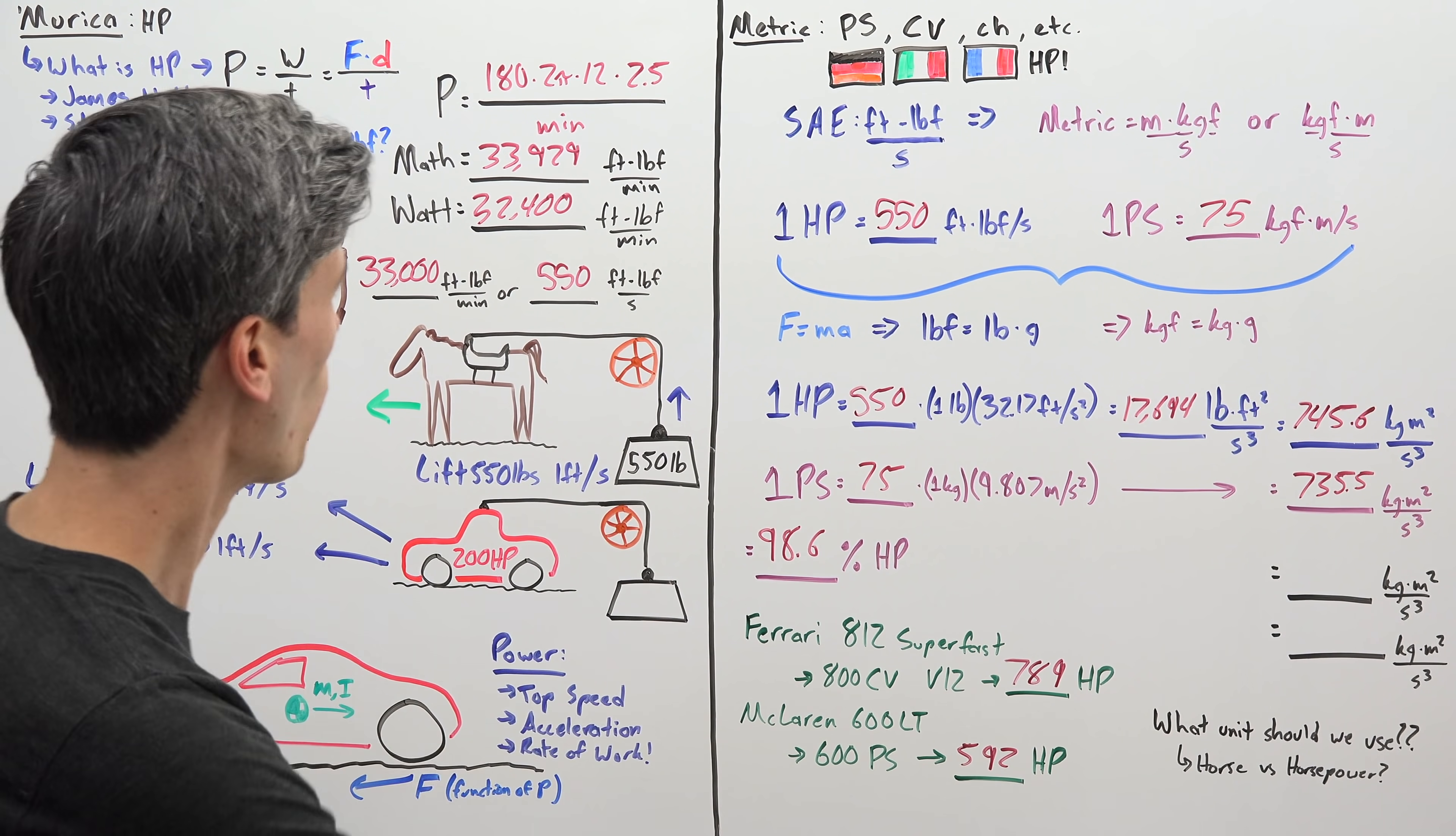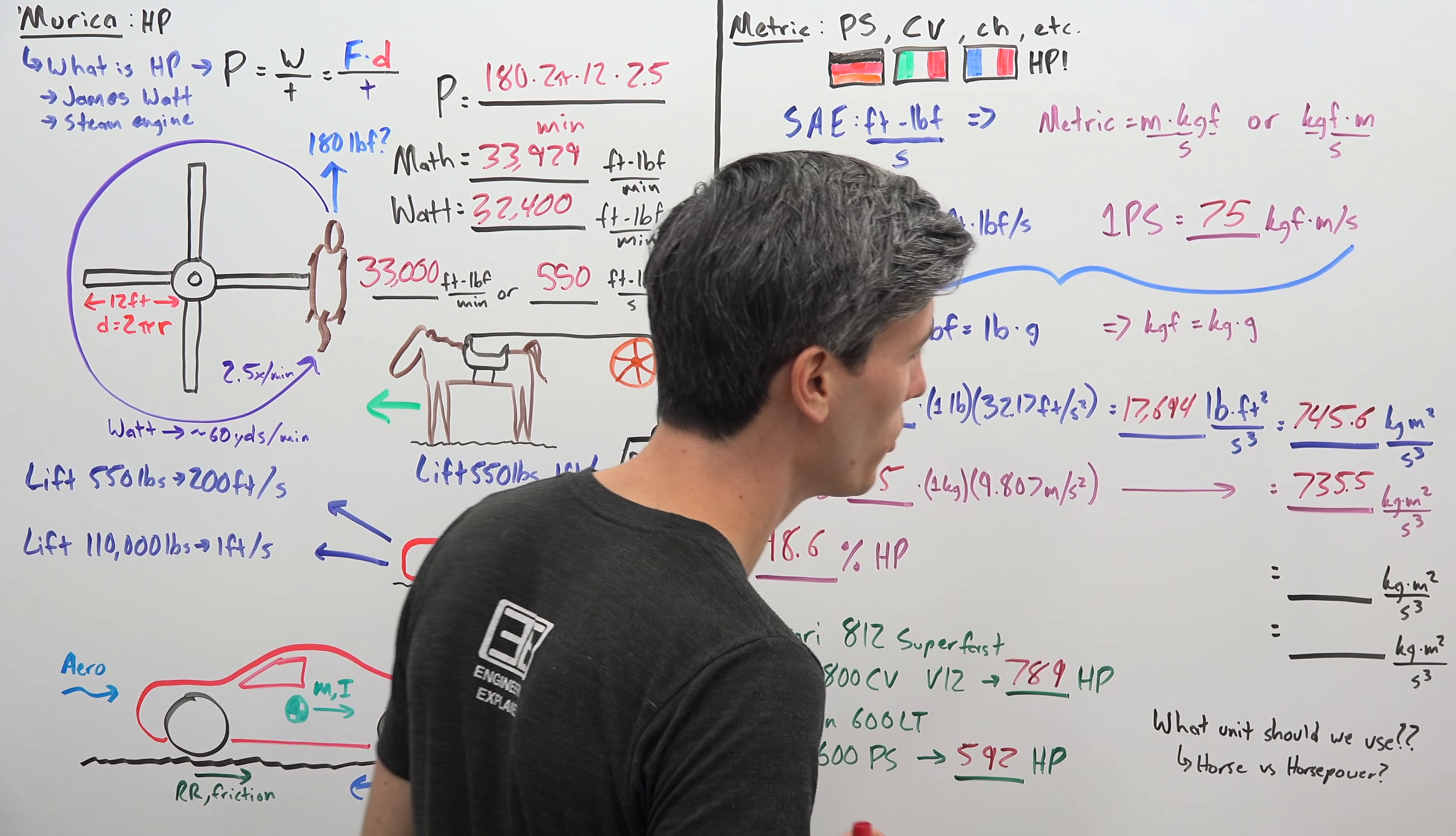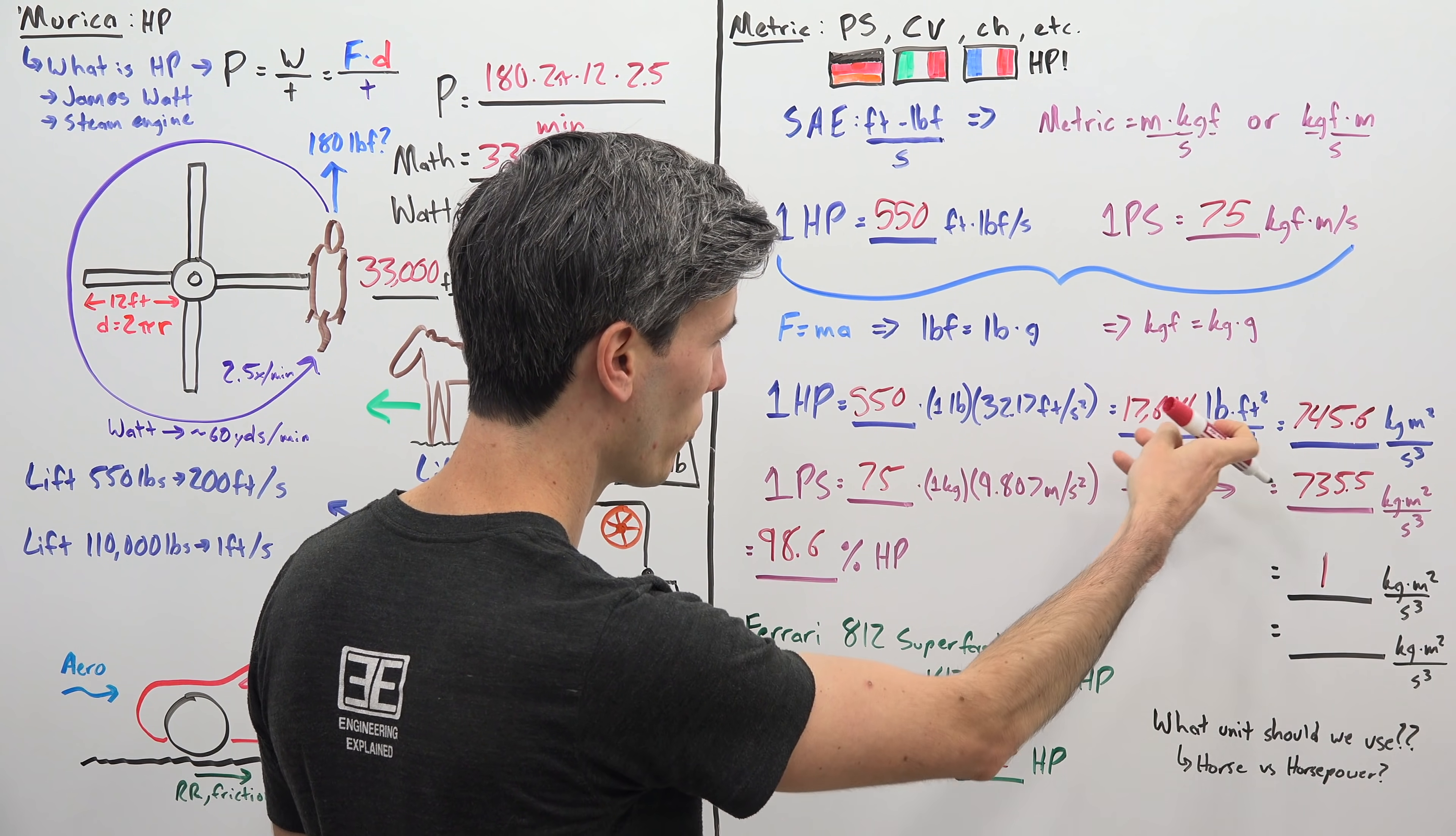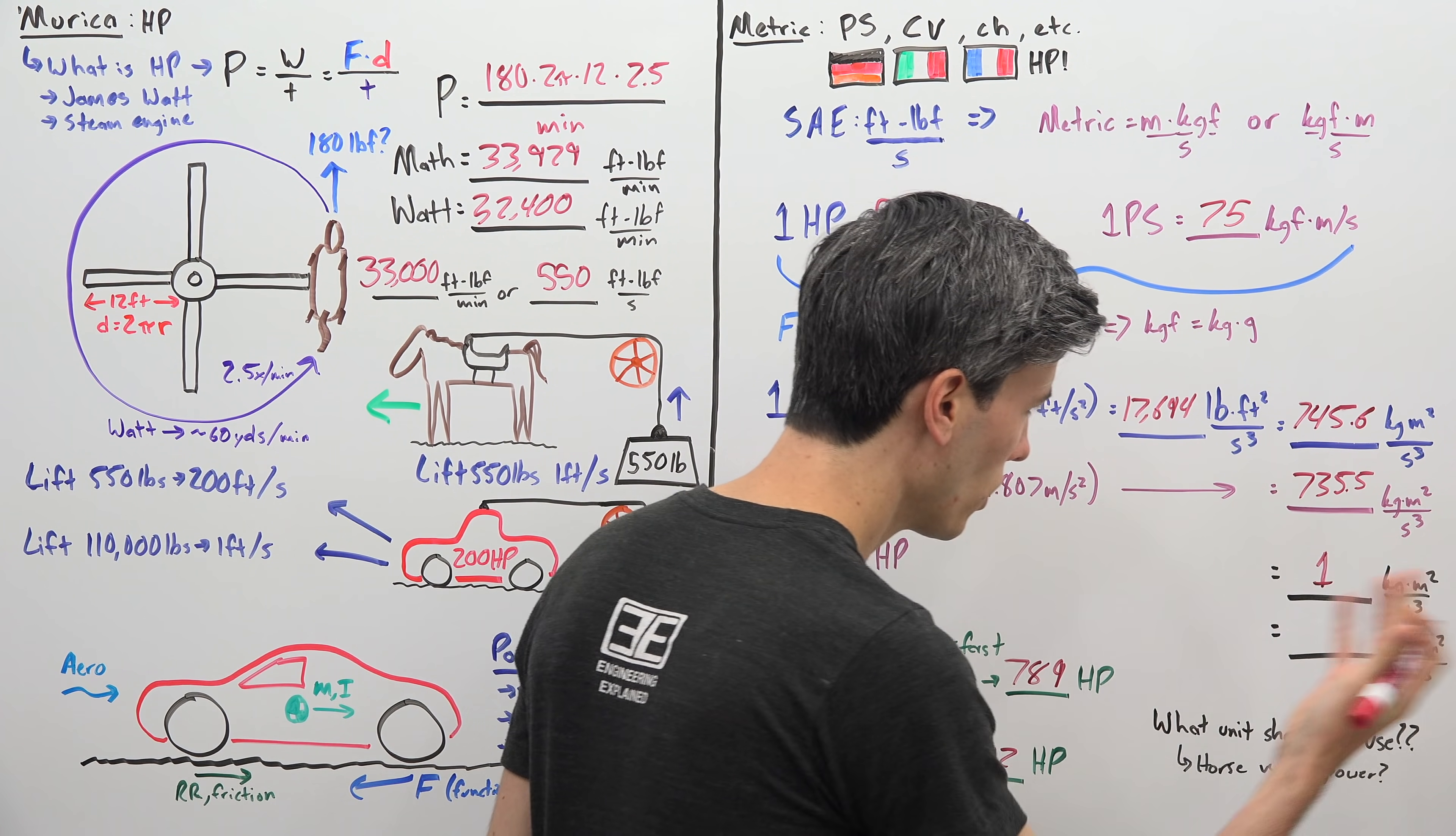So finally we get to our question, why is all of this nonsense and what units should we actually be using? So what if there was a unit that equaled one kilogram meter squared per second cubed instead of this 745.6 which doesn't make any sense, 17,694 pound feet squared per second cubed which makes no sense, 735.5 kilogram meter squared per second cubed which is the metric horsepower, again doesn't make any sense. What if there was a unit that just equaled one? You know wouldn't that be great? And there is!